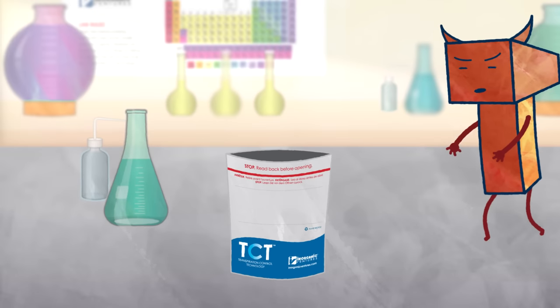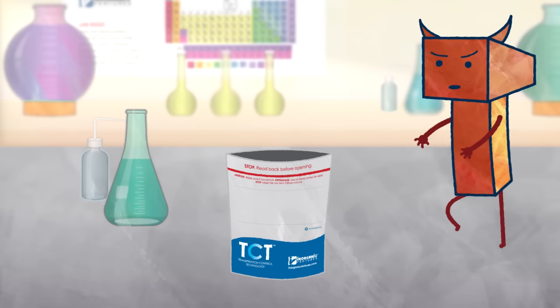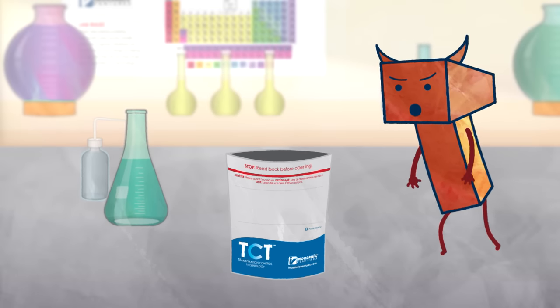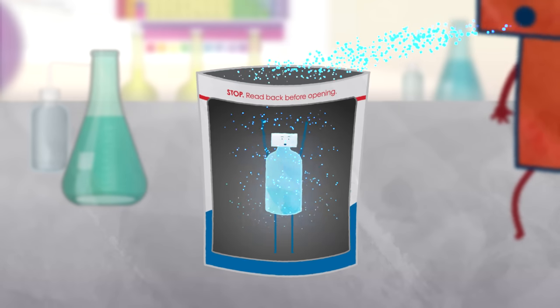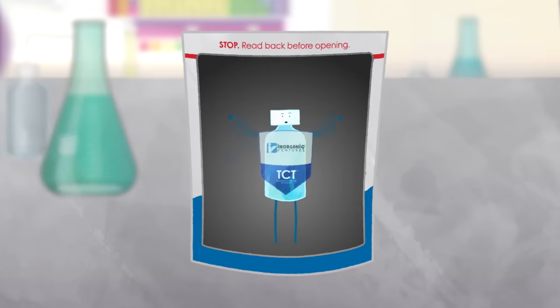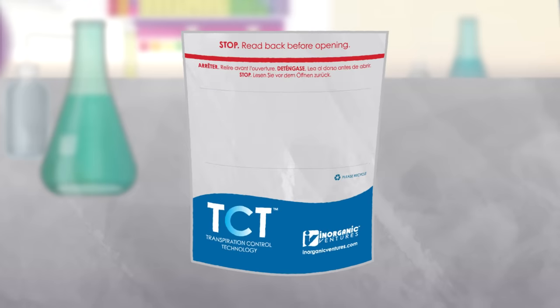Why's that? Even the most perfect custom CRM can be stalked by the Transpirasaurus. Over time, transpiration can rob a standard of its accuracy. But the TCT shield can ensure accuracy for up to three whole years or more.